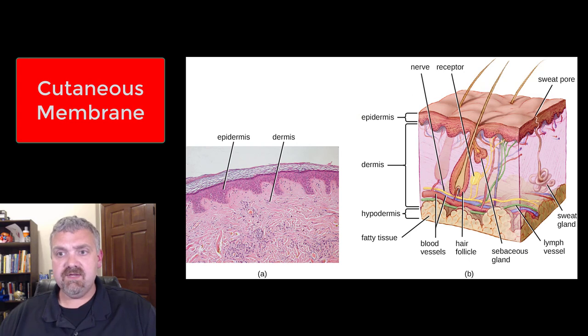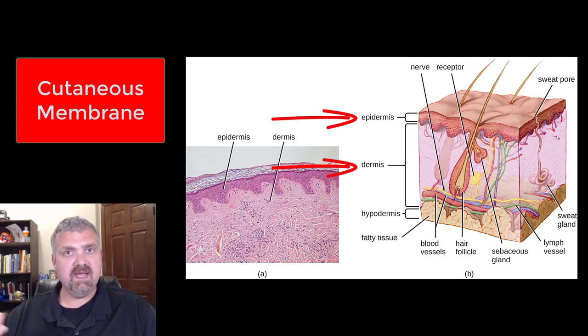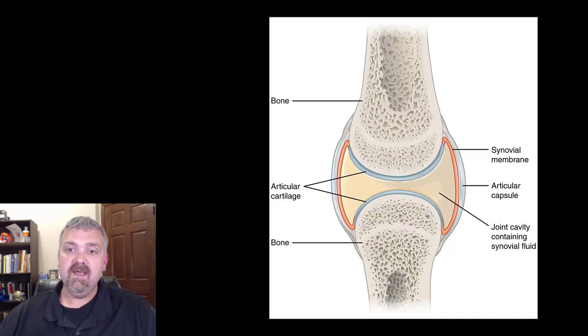Here we see the cutaneous membrane — your skin — the epidermis with the underlying dermis and hypodermis, also known as the subcutaneous layer.